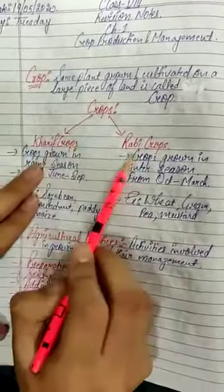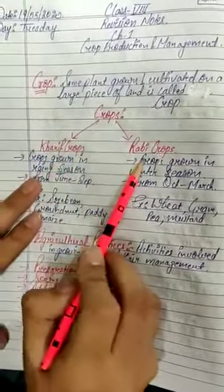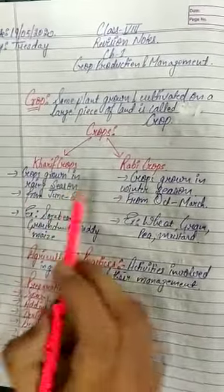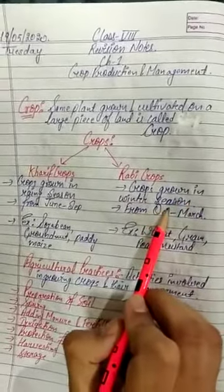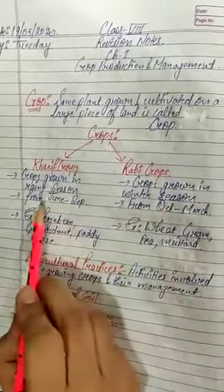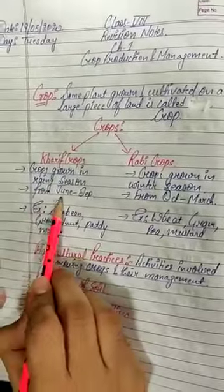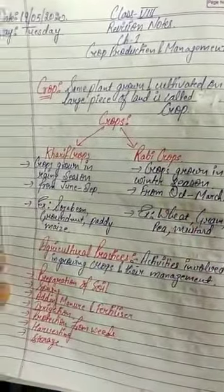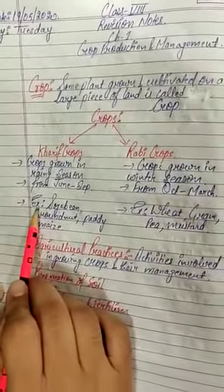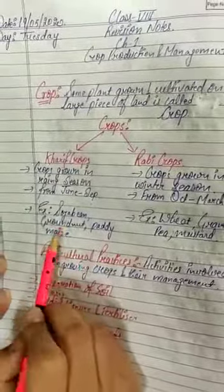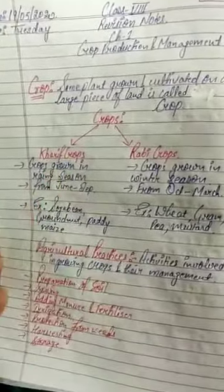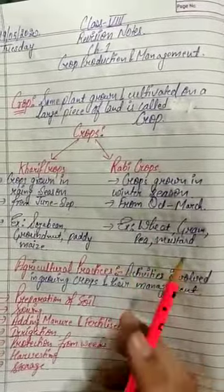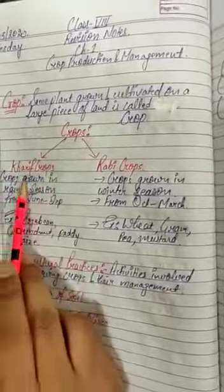Kharif crops and Rabi crops. Kharif crops are the crops grown in rainy season, whereas Rabi crops are the crops grown in winter season. Generally, Kharif crops are grown from June to September. Rabi crops are grown from October to March. Examples are soybean, groundnut, paddy, maize for Kharif crops, and wheat, gram, pea, mustard, linseed etc. for Rabi crops.